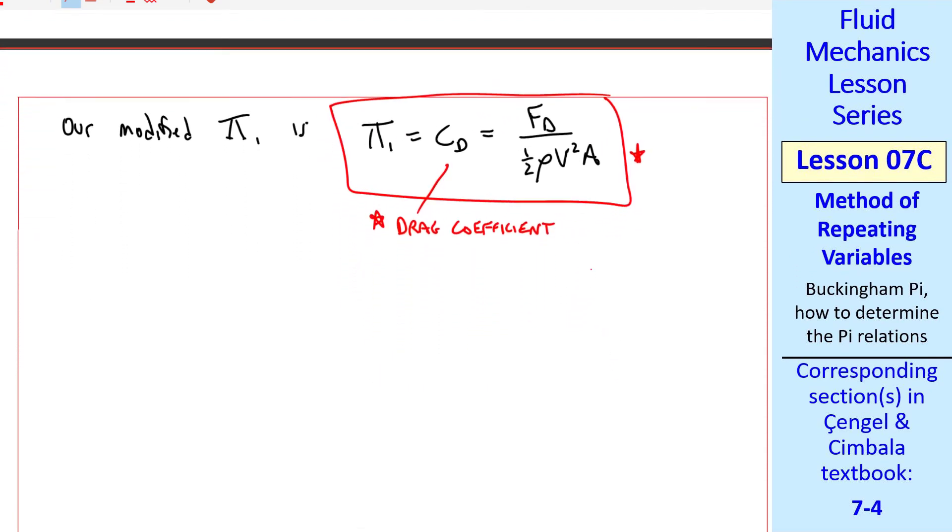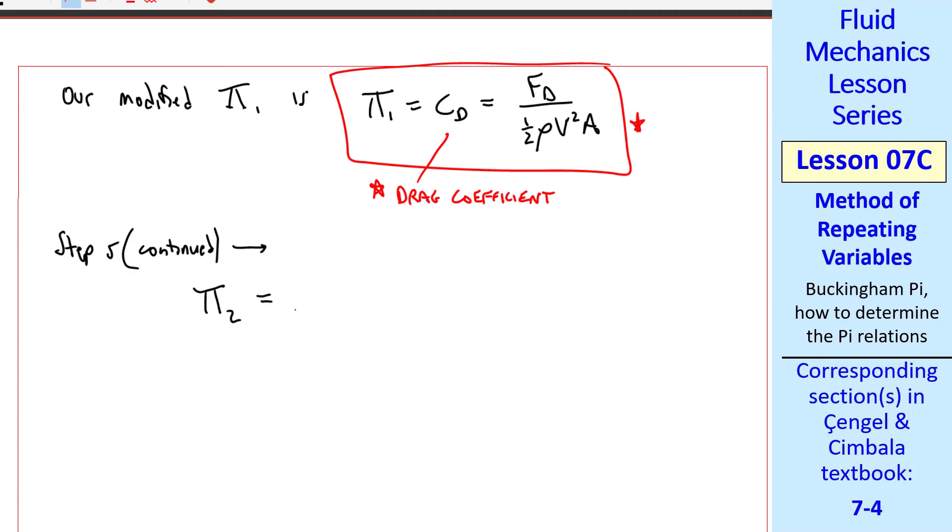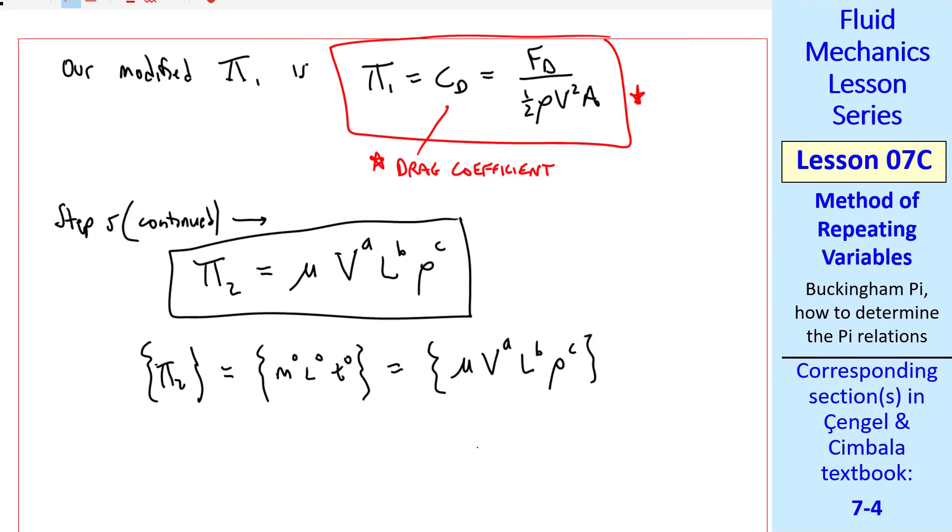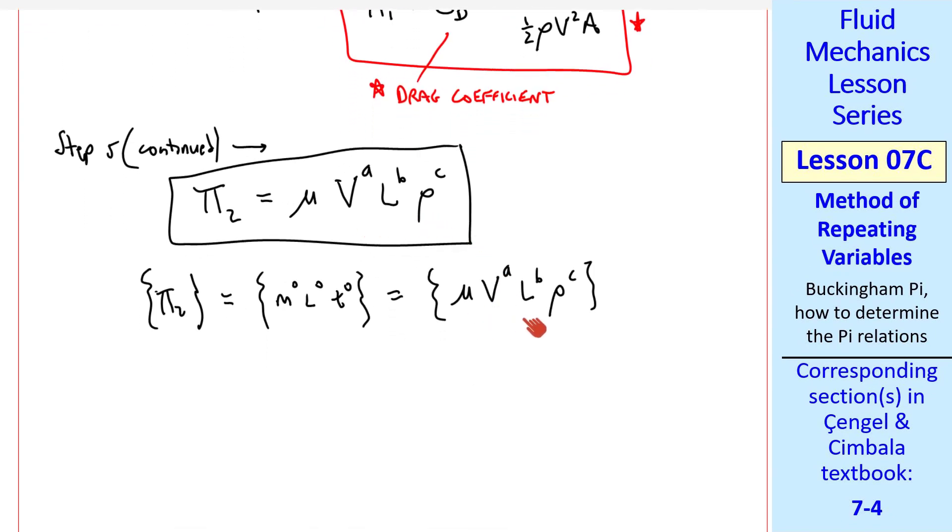We're only done with half of step five. Now we take any of the other remaining parameters and form another pi. Here the only parameter or variable that we haven't used yet is mu, so we form a pi by taking mu multiplied by our repeating variables to some unknown exponents again. But the A, B, and C that we calculate for this pi will differ from the ones we had for pi one. Again, we write the dimensions of pi two, which is dimensionless, and equate that to the dimensions of these variables raised to the exponents. I want to mention now why we call these variables v, l, and rho that we picked as repeating variables. It's because they have the potential of appearing in all of our pis. They're repeating in that sense. Sometimes one or more of these exponents becomes zero, so just because they're repeating variables doesn't mean they always end up in each pi, but they have the potential of doing so.